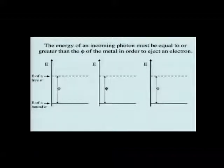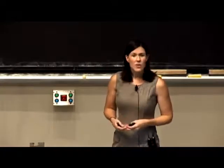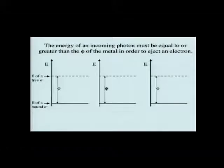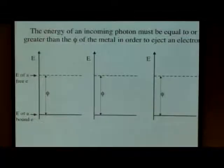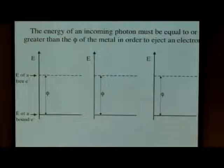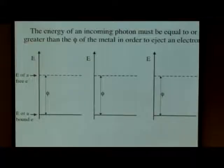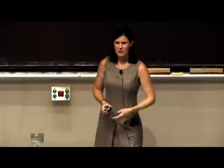It's often useful to draw an energy diagram to visualize the differences in energy we're discussing, so we do this here for the photoelectric effect. The incoming photon has to be equal or greater in energy than the work function of the metal. Energy increases on the y-axis. The straight line at the bottom represents the energy of a bound electron — a low, stable energy. The dotted line represents a free electron, which is a higher, less stable energy. The work function is defined as that difference between the free electron and the electron bound to the metal.